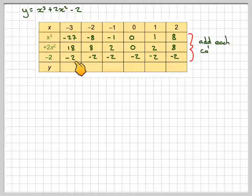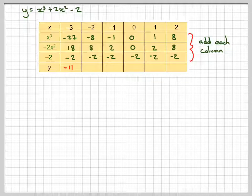And then what we do is we add each column. So minus 27, 18, minus 2 gives minus 11. This one will give me minus 2. This will give me minus 1. 0, 0, minus 2 will give me minus 2. 1, 2, minus 2 will give me 1. 1, 8, and 8, minus 2 will give me 14.